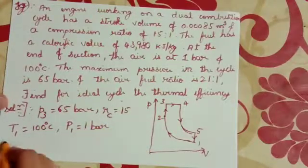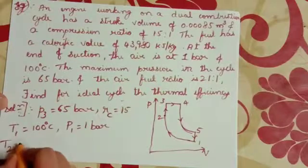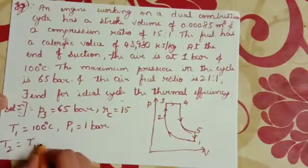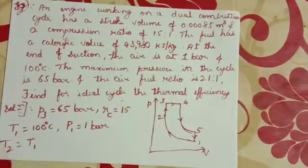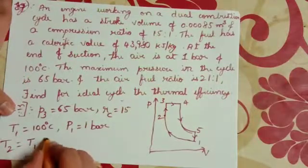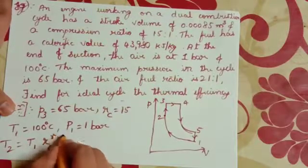Now T2 is equal to T1 into RC raise to gamma minus 1.